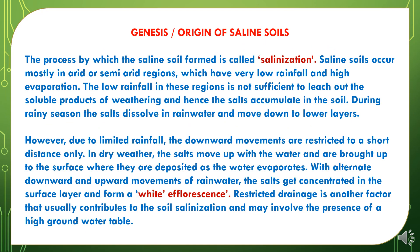The process by which saline soils form is called salinization. Saline soils occur mostly in arid and semi-arid regions with very low rainfall and high evaporation. The low rainfall is not sufficient to leach out soluble products of weathering and hence salts accumulate in the soil. During rainy season the salts dissolve in rainwater and move down to lower layers. However, due to limited rainfall, downward movement is restricted to a short distance. In dry weather, salts move up with water to the surface where they are deposited as the water evaporates. With alternate downward and upward movement, salts get concentrated in the surface layer and form a white efflorescence.